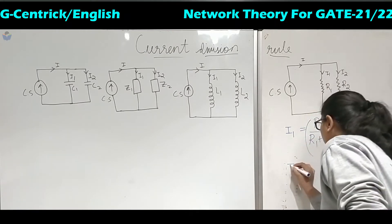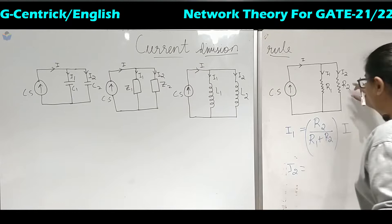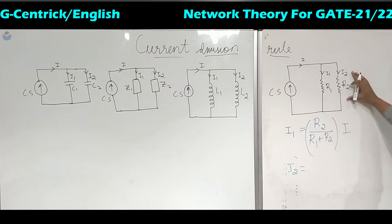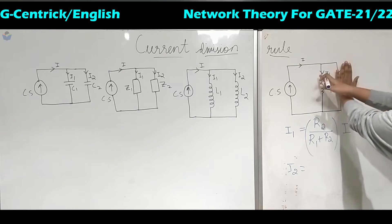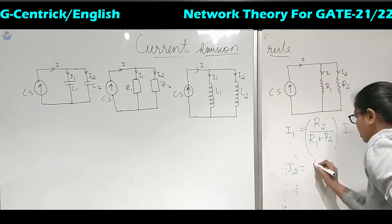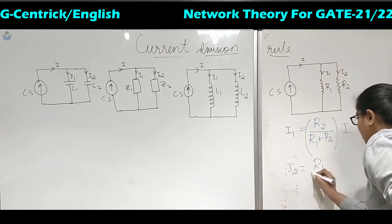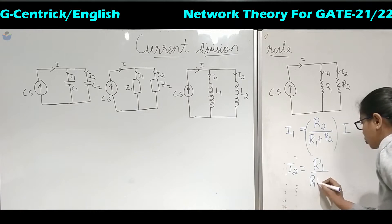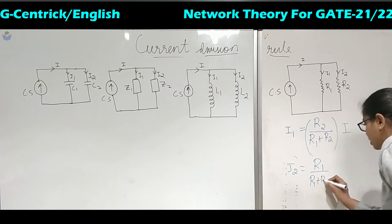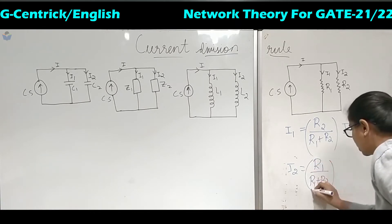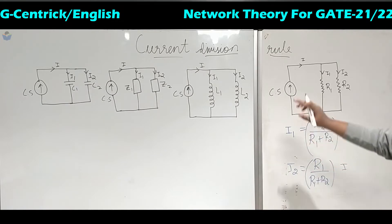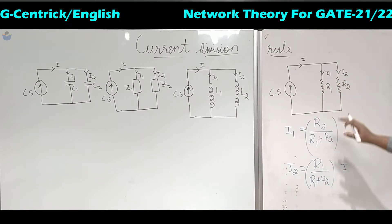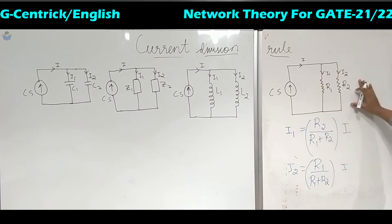Coming to I2, similarly do not take the value of the resistor in the branch for which you want to calculate the current. Leave that resistor and take the value of the opposite resistor, that is R1, again summation of two resistors, and this whole equation is multiplied by the total current I flowing in the circuit. This is the formula in the case of resistors.